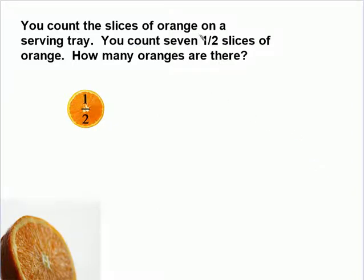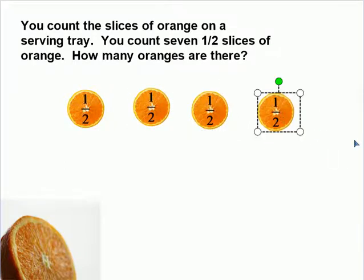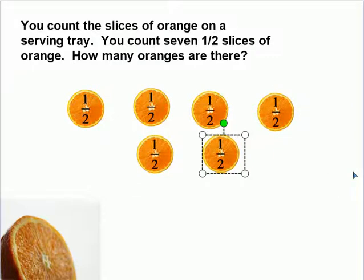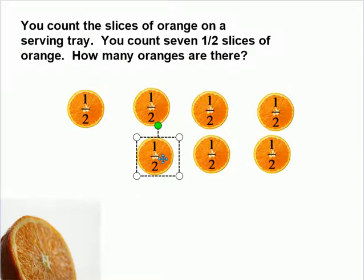You count the slices of orange on a serving tray. You count seven one-half slices of orange. How many oranges are there? We've got three, four, five, six, seven slices of orange on the serving tray, and each one of them is one-half. How many total slices of orange do we have? Well, this is a multiplication problem.